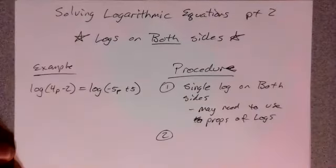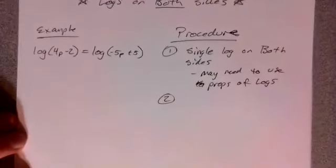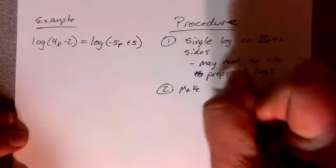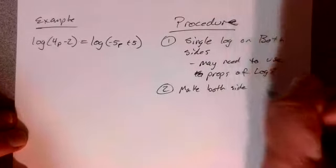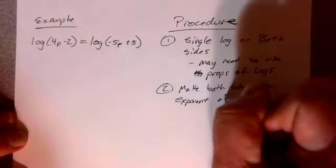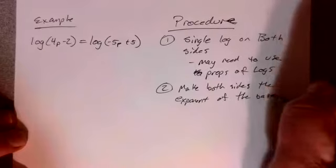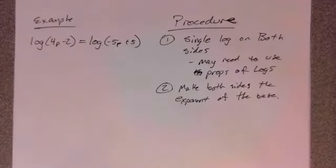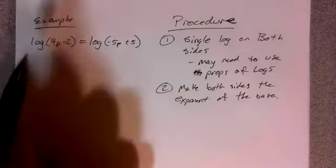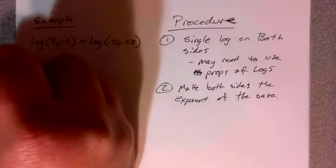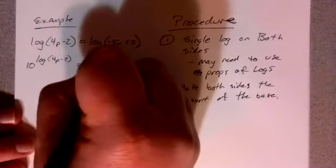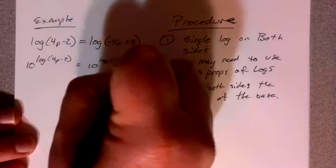Second step. And this is going to sound worse than it really is. It's going to be wordy, but the actual doing it, you're going to go, oh, that was easy. So here we're going to make both sides the exponent of the base. And that sounds worse than it really is. So what's the base? Here we have log base 10. So now my second line is going to say 10 raised to the log base 10 of 4p minus 2 equals 10 raised to the log base 10 of negative 5p plus 5.